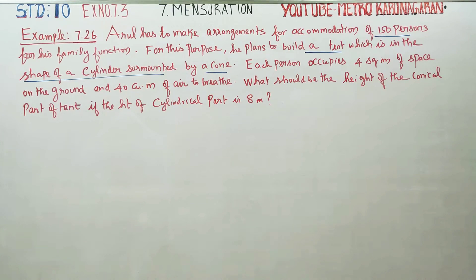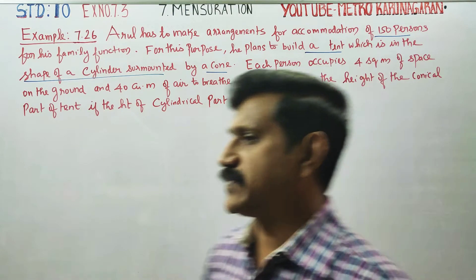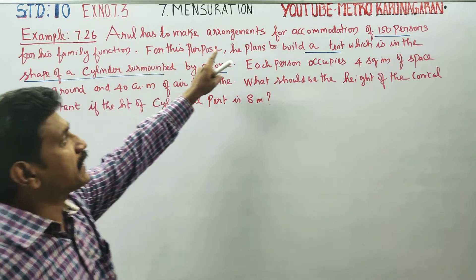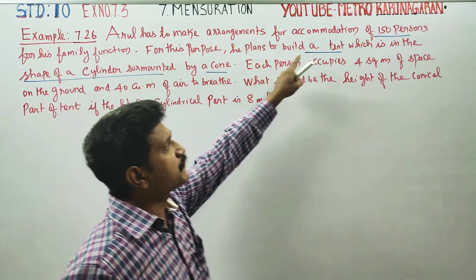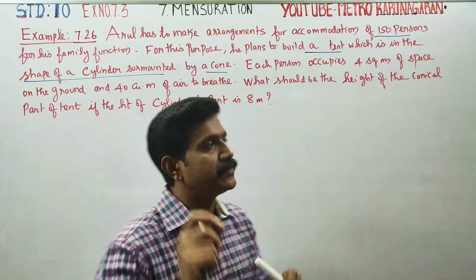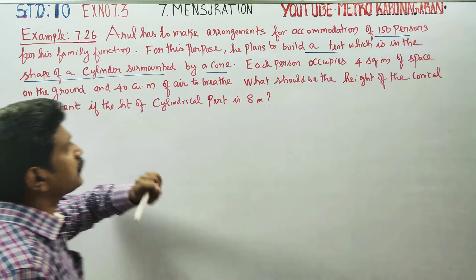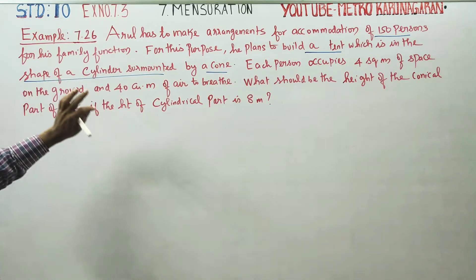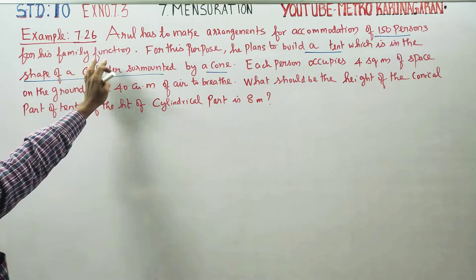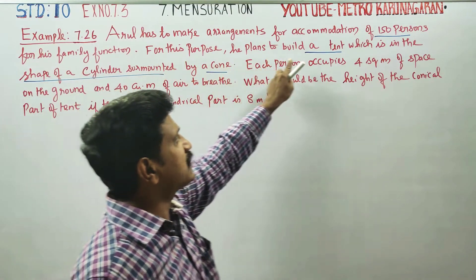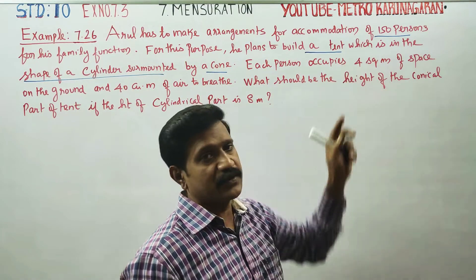Dear students, I am Metro Karanagaran. In Example 7.26, Arul has to make arrangements for accommodation of 150 persons — 150 persons need accommodation ready for his family function. For this purpose, he plans to build a tent.